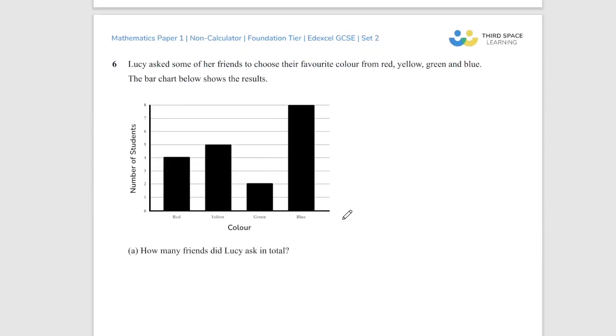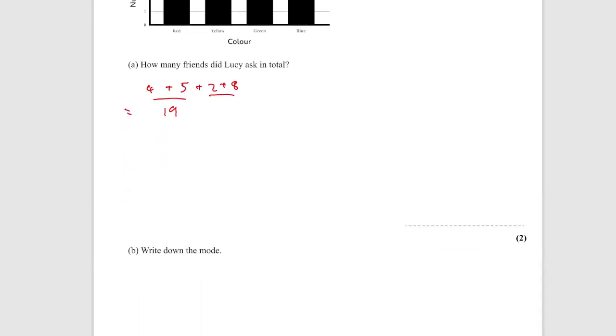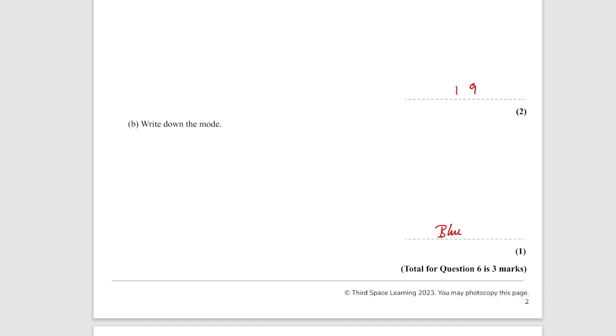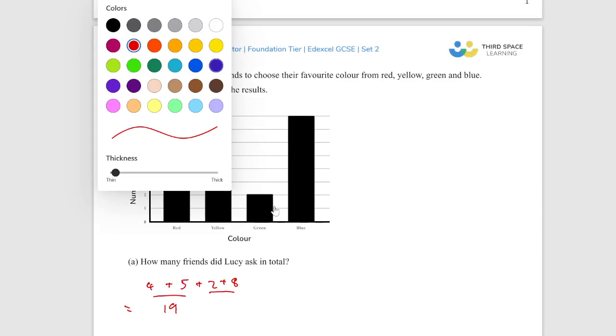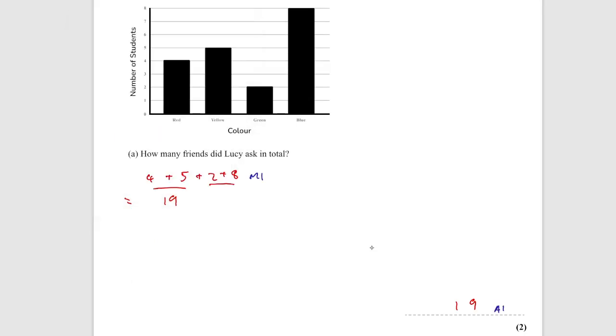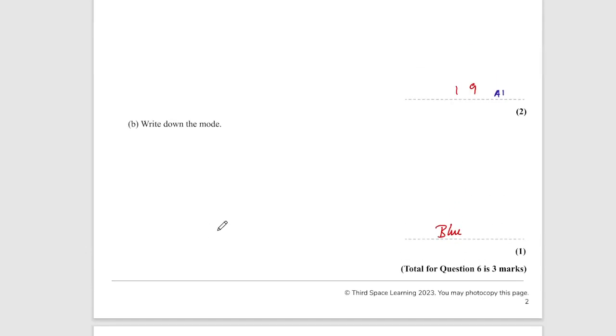Question 6. Lucy asked some of her friends to choose their favourite colour from red, yellow, green and blue. We're looking at 4 for red plus 5 for yellow plus 2 for green plus 8 for blue. I'm going to add these in pairs. That's 9, that's 10. So we're looking at 19. So she asked 19 friends. Write down the mode, so that's the colour that was chosen the most. That would be, in this case, blue. Marks for that question: for the 19, it is an M1, and then an A1 for the 19. And then for part B, blue is just a B1 mark.